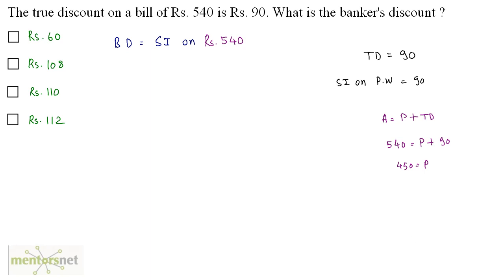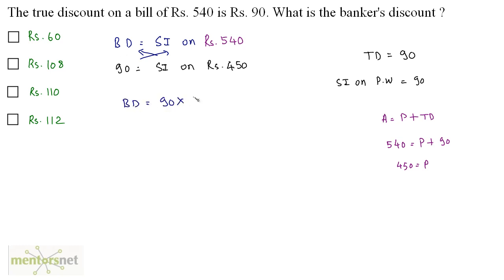True discount is the simple interest on the present worth, and true discount is 90. So I can write: 90 equals the simple interest on the present worth, that is Rs. 450. We can cross multiply and equate. So the banker's discount equals 90 times 540 divided by 450, which gives us Rs. 108. So the banker's discount is Rs. 108.